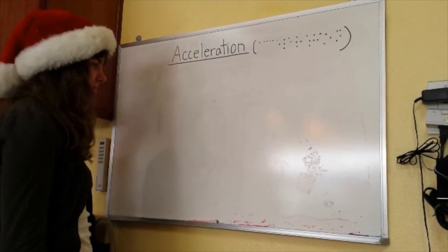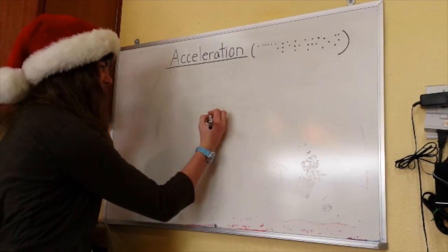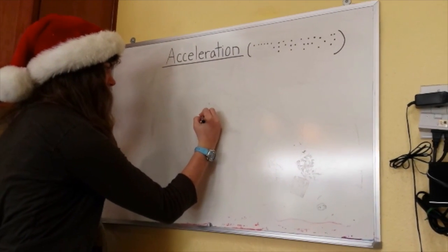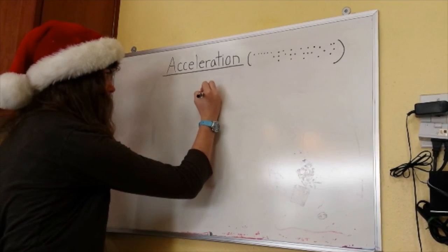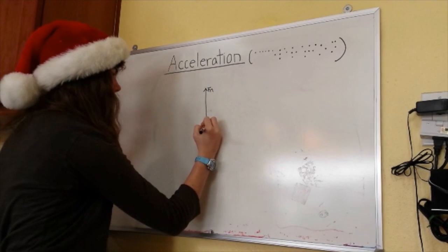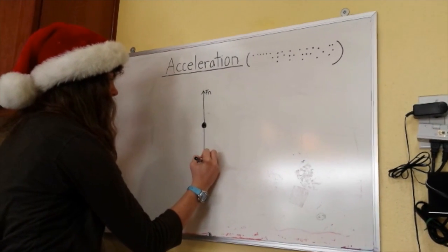On a free body diagram representing an accelerating object, the length of the vectors can vary depending on the forces acting upon it. In this example diagram, the forces on the object are normal force, gravitational force, and applied force.